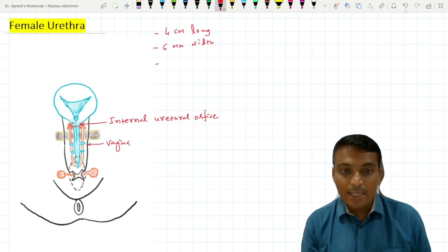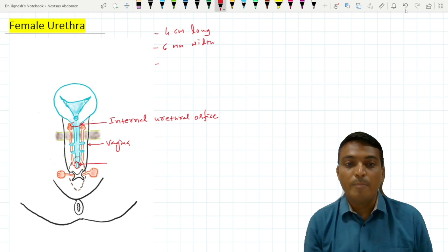It reaches the external urethral orifice, which is situated within the vestibule of the vagina, just in front of the vaginal opening.